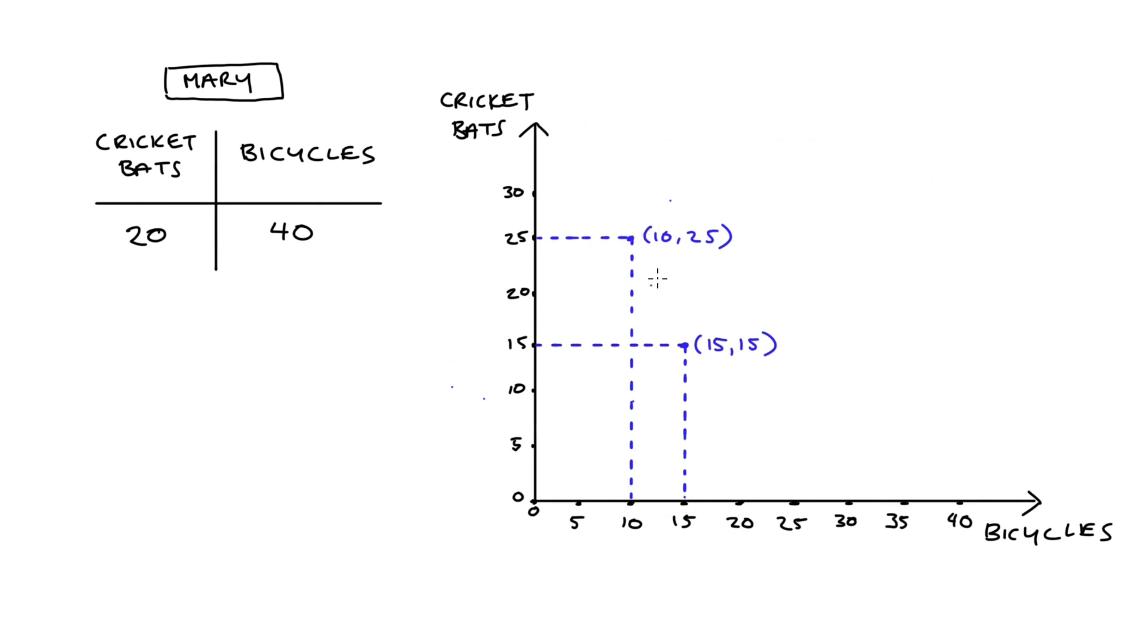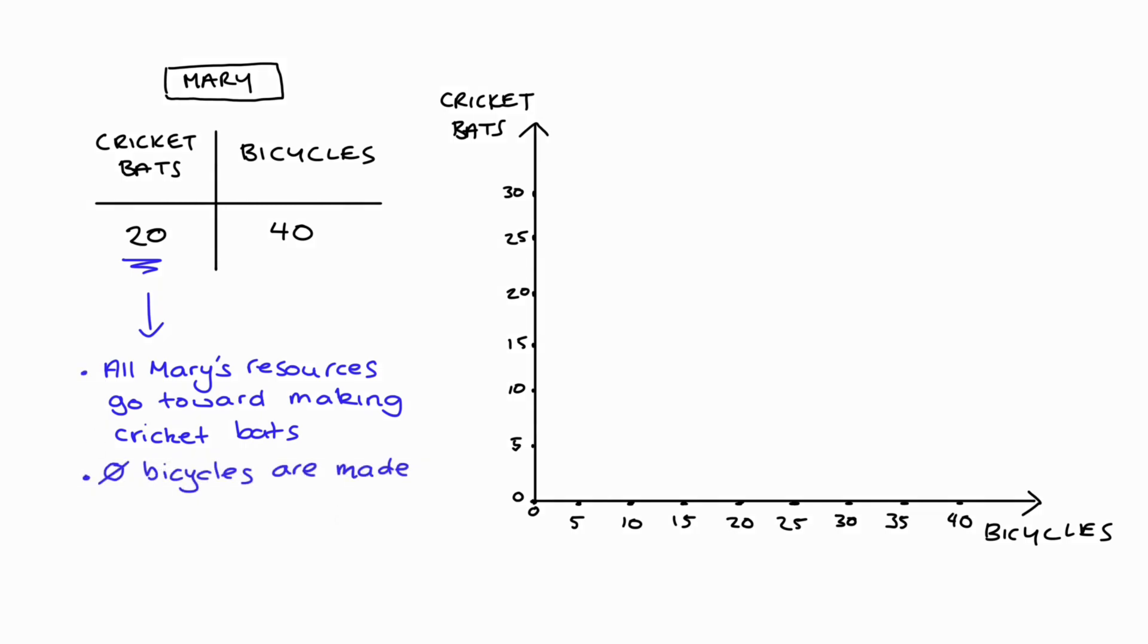We know from the table that at most Mary can produce 20 cricket bats, and at this point all of Mary's resources are being put towards making cricket bats. This means that if Mary makes 20 cricket bats, she will make zero bicycles because she has no resources left. This means our vertical axis intercept will be 20 because this point corresponds to 20 cricket bats and zero bicycles.